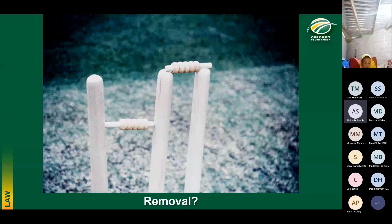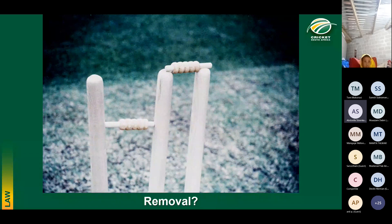Is this wicket down? In the video we saw and emphasized: if one or both bales are completely removed from the top of the stumps, the wicket is down. Ask yourself: is one or both bales completely removed from the top of the stumps? If yes, the wicket is down. In this picture, one bale is completely removed from the top of the stump — so yes, this wicket is down.